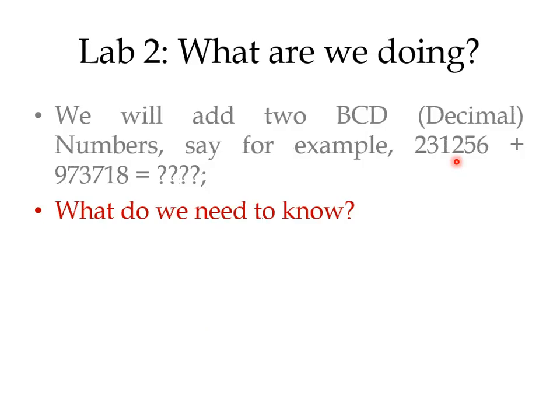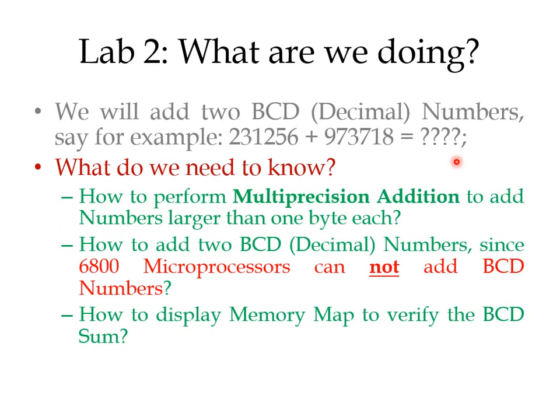We'll be dealing with both of these problems and we'll show that we can still get the sum in decimal. What we need to know for this: we might need some techniques, some tricks, some instructions. Number one, we need to know how to perform multiposition addition. Why multiposition? Because each number is three bytes long in hex, and you can't add three bytes together. You start from the lowest byte and work your way to the left.